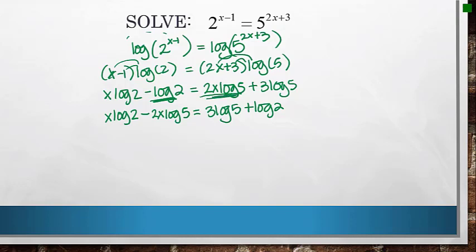I subtracted this from both sides that left me with 3 log 5 on the right. And then I added this to both sides, so that left me with just this x log 2 on the left. I got all of the x terms onto the left, all of the non-x terms or the constants on the right. Now I can actually see that these have in common an x. So I'm going to factor an x out. When I do that, this leaves me with log 2 minus 2 log 5.